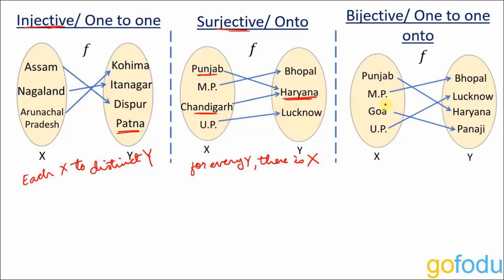Bijective is a combination of both injective and surjective. Each element of one set is paired with exactly one element of the other set, and each element of the other set is paired with exactly one element of the first set — basically there are no unpaired elements in any set. To summarize: injective means every x has a unique y; surjective means every y has an x, though two x's can share a y; bijective means one-to-one pairing with no unpaired elements.